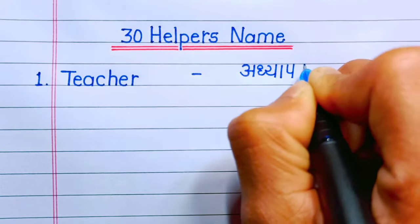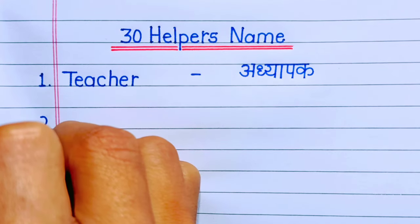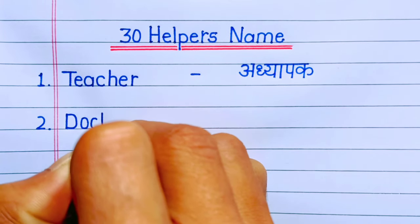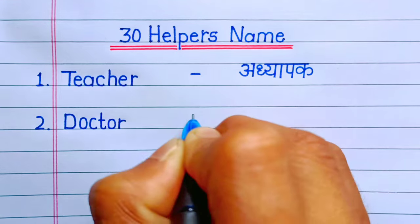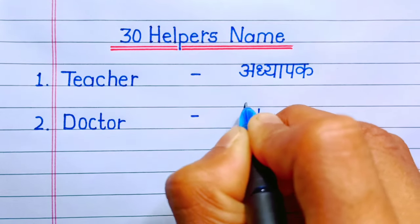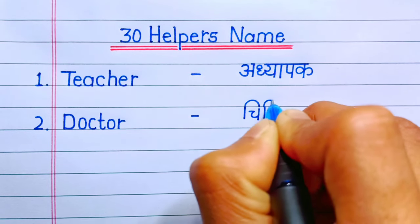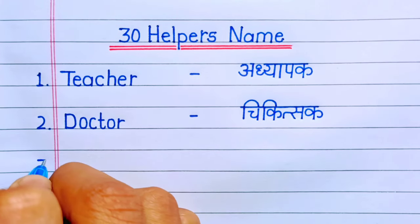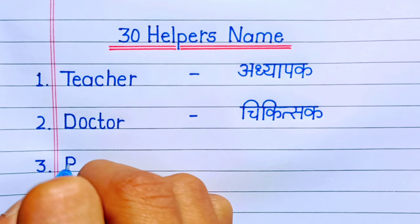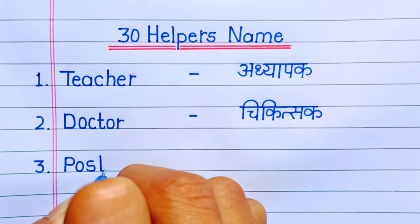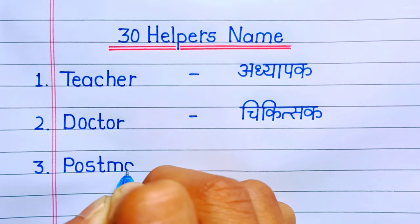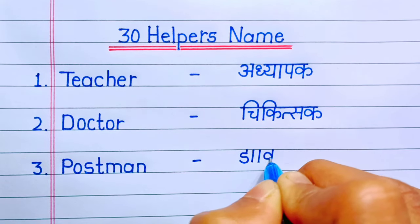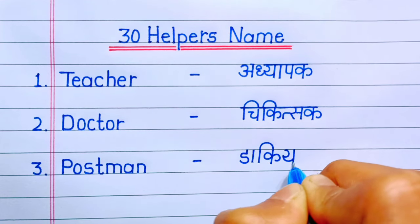Number one: teacher. Teacher means Adhyapak. Number two: doctor. Doctor means Chikitsak. Number three: postman. Postman means Dakiya.